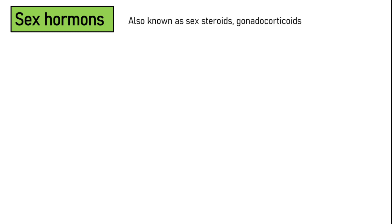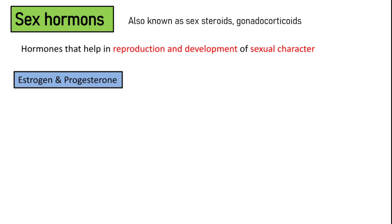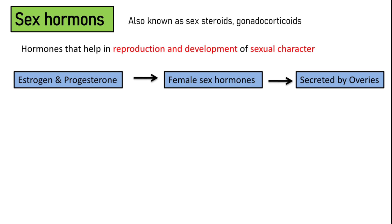Now let's talk about sex hormones. They are also known as sex steroids or gonadocorticoids. Sex hormones are the hormones that help in reproduction and development of sexual characters. The sex hormones differ in males and females. Estrogen and progesterone are female sex hormones that are secreted by the female primary sex organ, the ovaries. These female sex hormones stimulate female sexual characters.